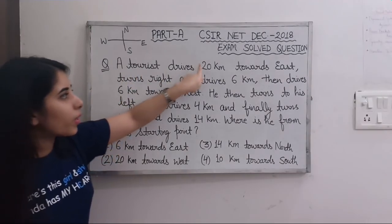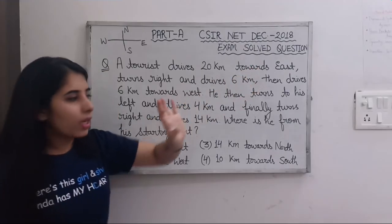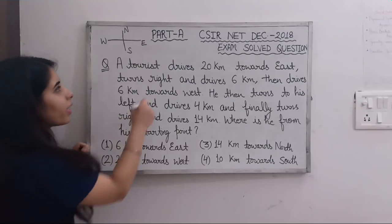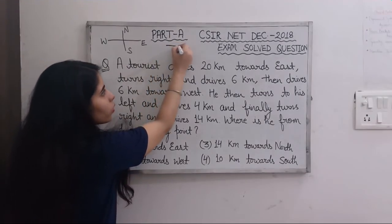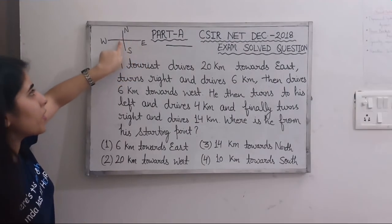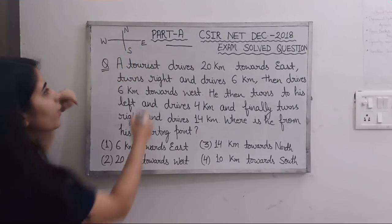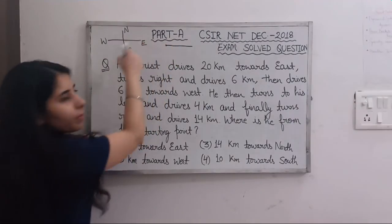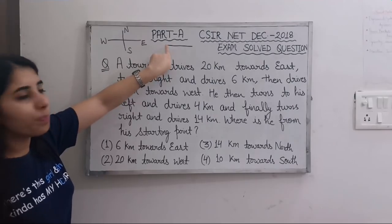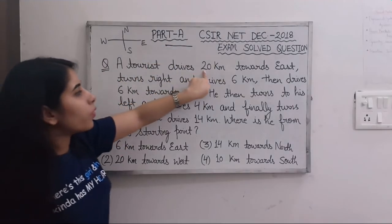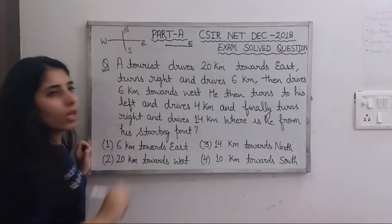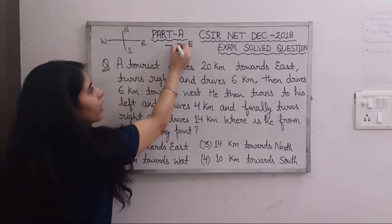First, a tourist drives 20 km towards east. So we start at the origin — imagine this is the starting point. We are moving 20 km towards east. Let's mark the directions as well.